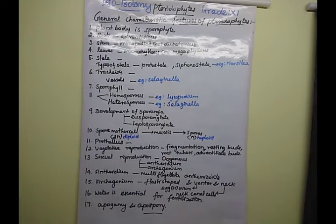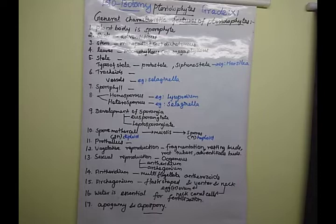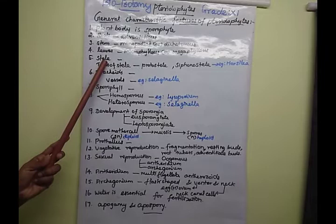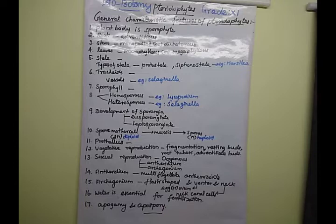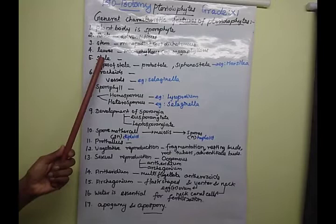The next one is stele. What is stele? It's the central cylinder of vascular tissue - the vascular tissue formation. The central cylinder consists of xylem, phloem, pericycle, and sometimes a medullary pith is also present in Pteridophytes - that is called monostele. The stele comes in two types: one is protostele and another one is siphonostele.